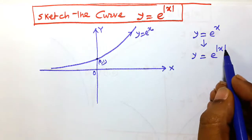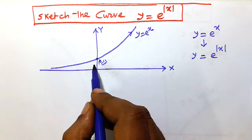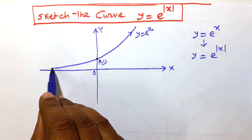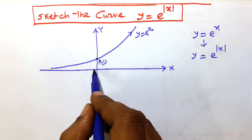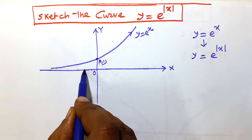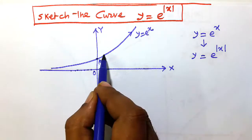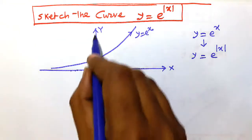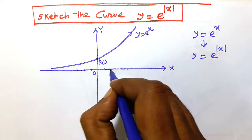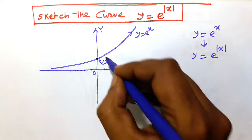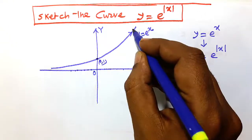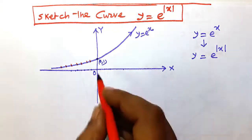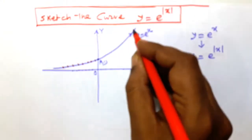To plot y = e^|x|: first, neglect the curve for x < 0 — that is the negative part of the x-axis. Then take the image of the curve for x > 0 about the y-axis as a plane mirror. We neglect the left portion and reflect the right portion.